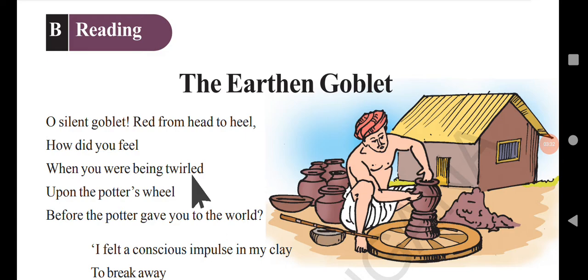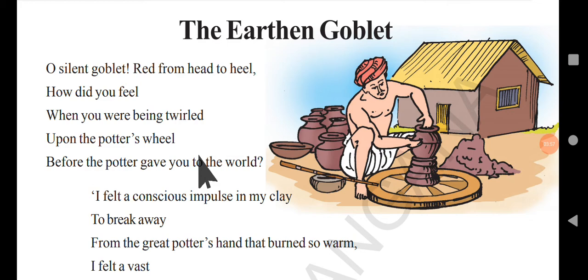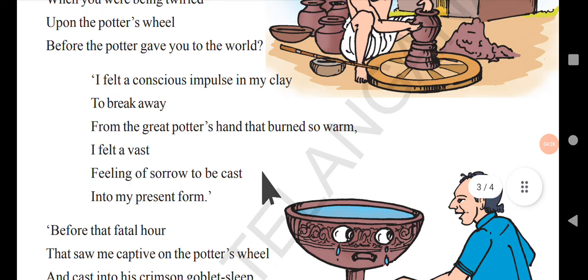He asks how the goblet felt when being twilled — that is, spun around on the potter's wheel. The potters spin the wheel while shaping the pots. He is asking how the goblet felt upon the potter's wheel, before the potter could give it to the world — that is, to people who come and buy it. That was the question asked by the poet.